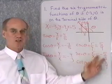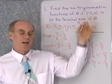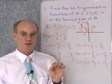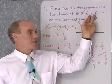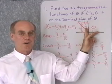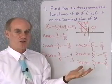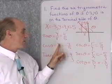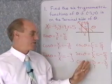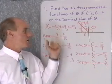Here are my six trigonometric functions of angle θ, defined by the point (-3, 4) on the terminal side. This definition specifically calls for a point on the terminal side, so I find the distance from the origin to that point by the Pythagorean theorem — that's 5. The six trigonometric functions are just all the different ratios I can make with x, y, and r.